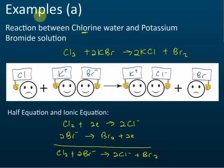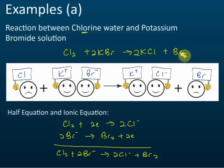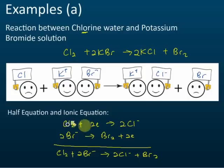Chlorine reacts with potassium bromide — chlorine displaces bromide to form potassium chloride and bromine. For the half equations: first, the reaction for chlorine. Initially it's Cl₂; after the reaction it becomes chloride. So chlorine receives electrons to become chloride. Then we write the half equation for bromide: initially it's bromide; after the reaction it becomes bromine.